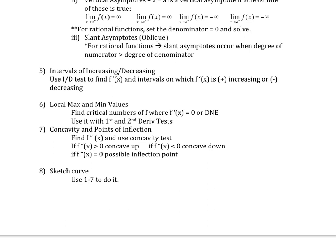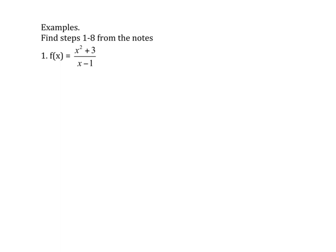Let's take a look at our first example: do steps one through eight and sketch the curve of this function, x squared plus three over x minus one. For this one, we can see that the domain — this is step one — the domain is going to be all real numbers except x equals one. So we will have something going on at one. It doesn't look like it's going to be a hole; most likely it will be an asymptote at this point, but we'll determine that in a little bit.